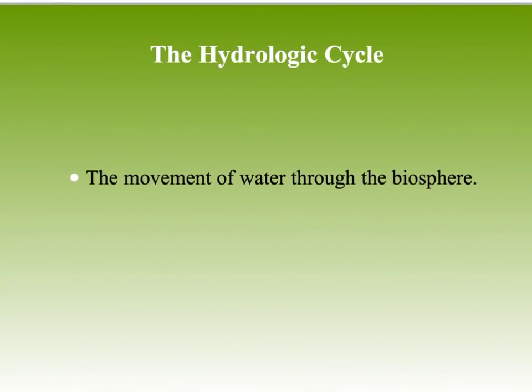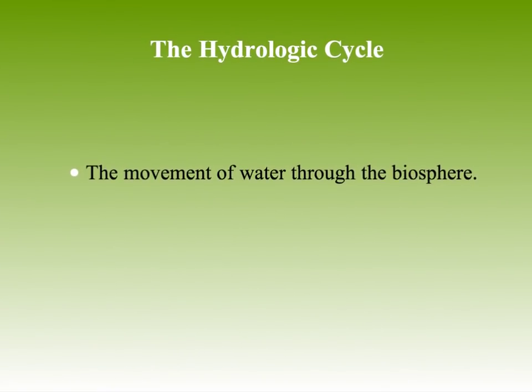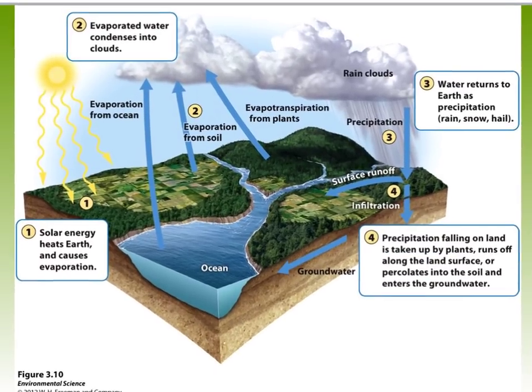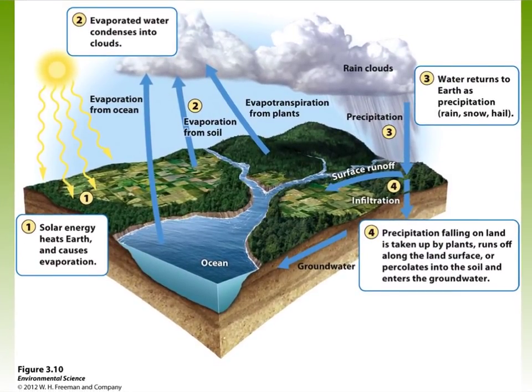The first cycle is the hydrologic cycle, or the water cycle — the movement of water molecules through the biosphere or through an ecosystem. This is an important diagram in your book, and you probably already know a lot about the water cycle, but this is just a refresher.